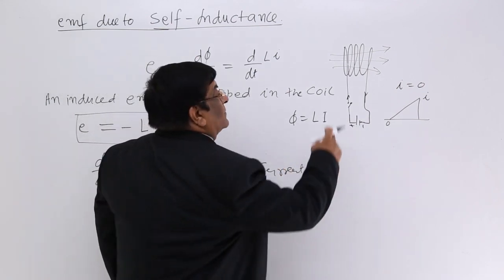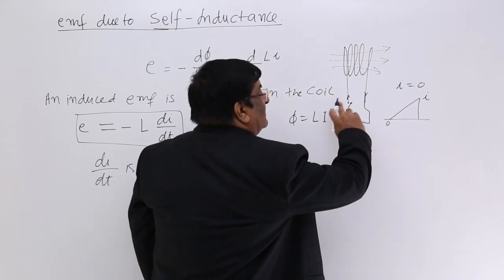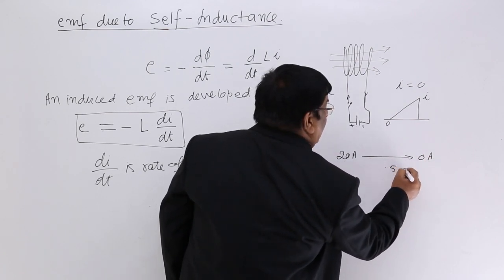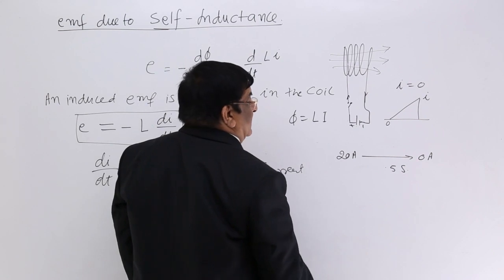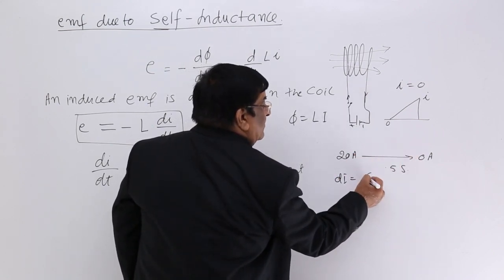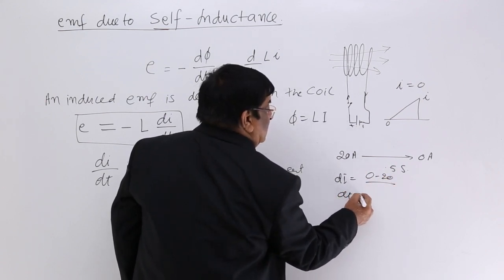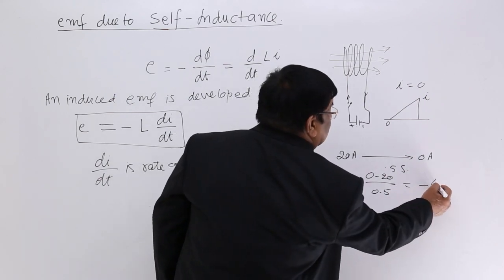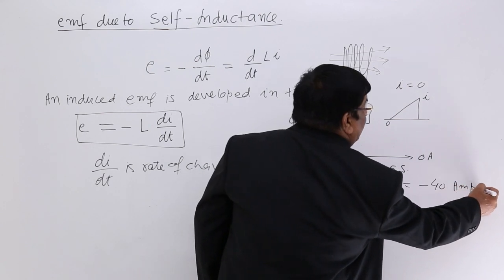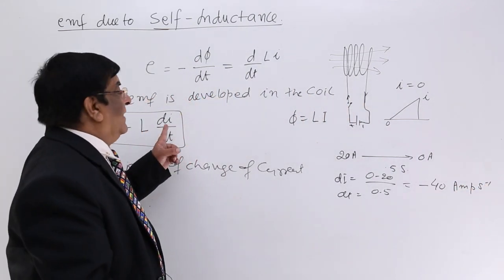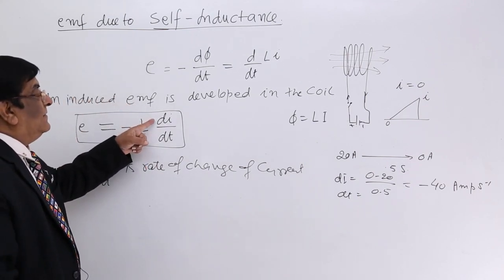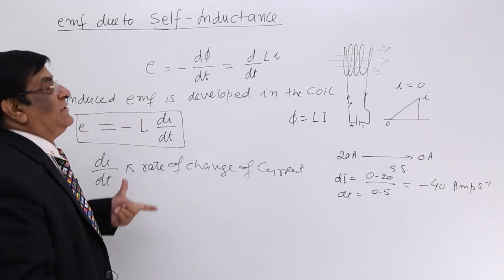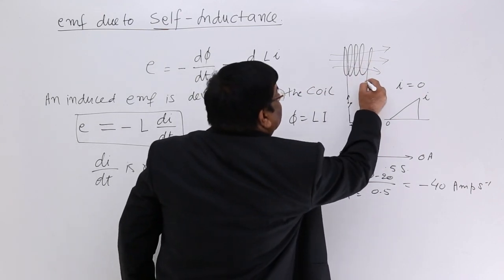Suppose in a coil there is a current of 20 ampere flowing, and when we switch it off it becomes 0 ampere, and this takes a time of 0.5 second. What is di by dt? di equals 0 minus 20, and dt equals 0.5, so di by dt equals minus 40 ampere per second. The greater the value of di and the smaller the dt, the greater the induced EMF across the coil.